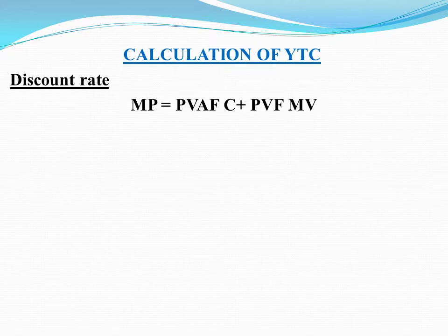The market price equals the present value annuity factor of the coupon plus the present value factor of the maturity value. The coupon interest uses the annuity factor, while the maturity value uses the single cash flow present value factor.